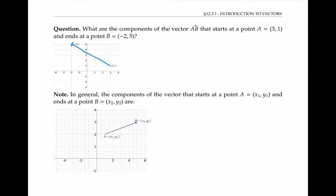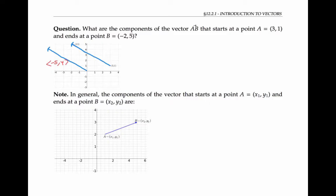Please pause the video to find the components of the vector that starts at the point (3, 1) and ends at the point (−2, 5). By moving the vector so that it starts at the origin, we can see that it extends negative five in the x direction and four in the y direction, so its components are ⟨−5, 4⟩. We could have predicted that without physically moving the vector: the difference in x coordinates tells us how far the vector extends in the x direction, and the difference in y coordinates tells us how far it extends in the y direction. So the components are negative two minus three in x, and five minus one in y.